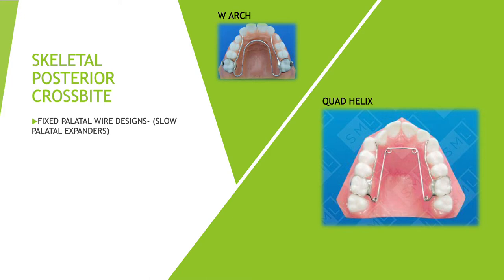The only difference between the W-arch and the Quad Helix is that the Quad Helix has two round loops near the canines and another two loops of wire near the molars. These helixes help in increasing the range of action of the force being applied. Because the range of action increases, the amount of force required to produce tooth movement is reduced — a basic biomechanical concept of tooth movement.